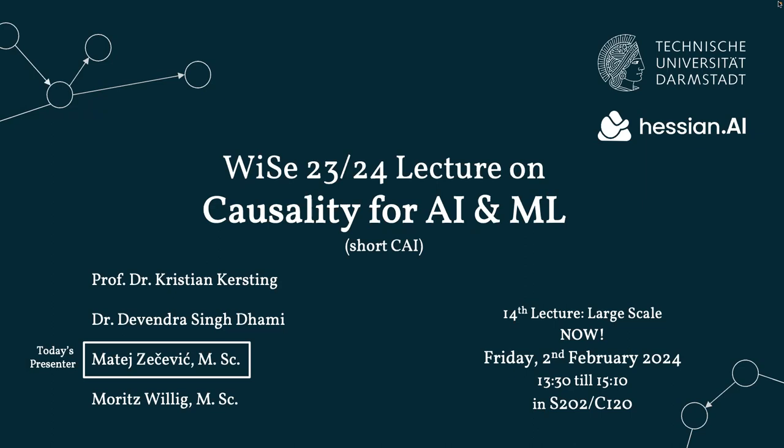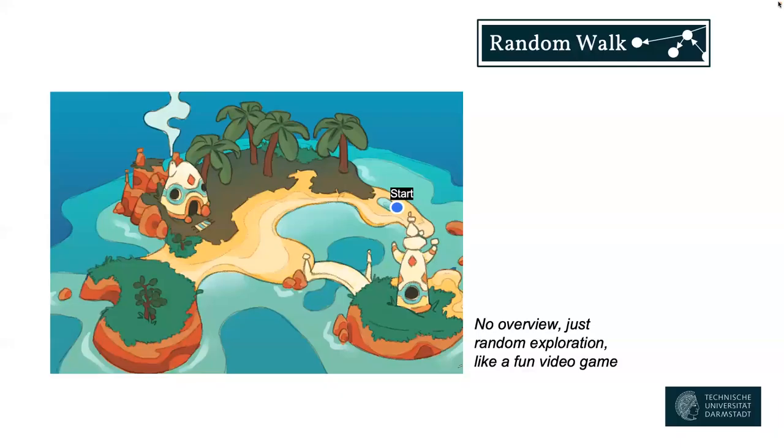Hello everyone, and welcome to the final technical lecture for CHI, causality for AI and machine learning. Today we're going to talk about large scale. It's ongoing research, and we're going to focus on all these aspects of scaling where we are interested in really working with practical applications, large domains, with a high number of variables — essentially to get causality on what the biggest success stories of deep learning have achieved thus far.